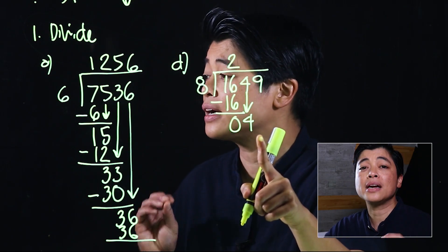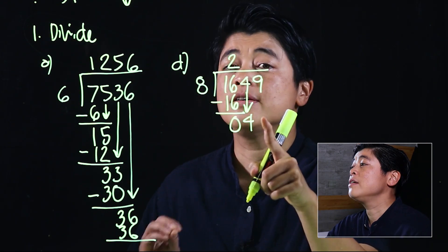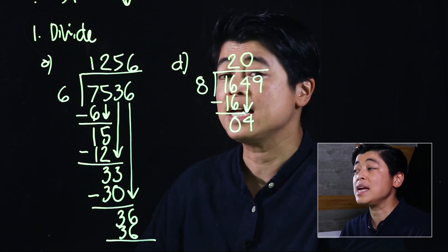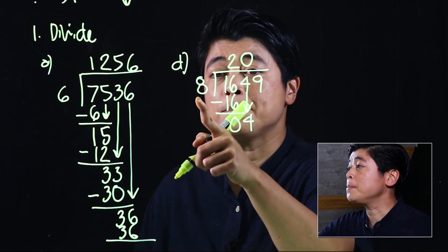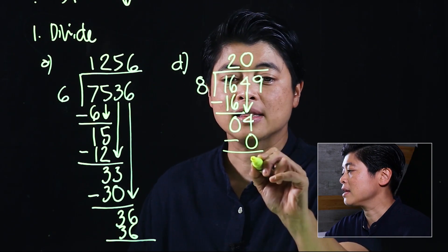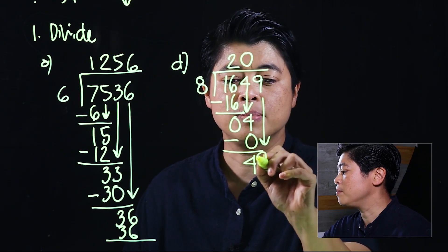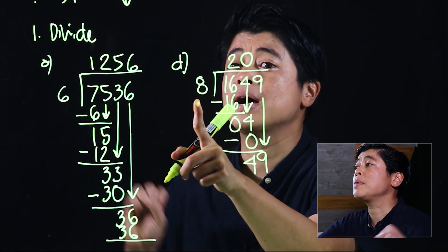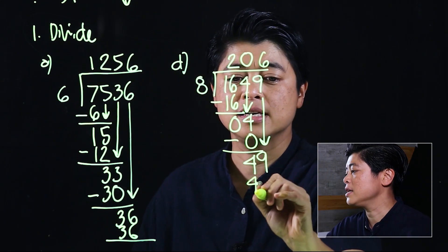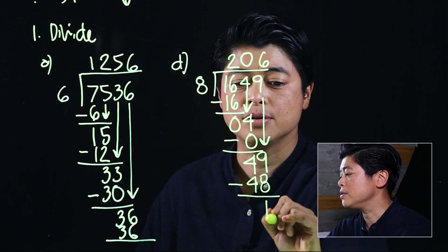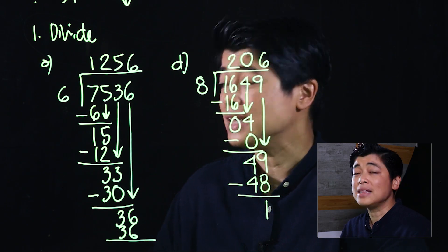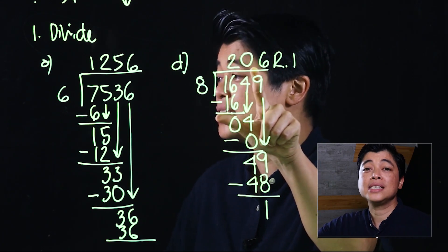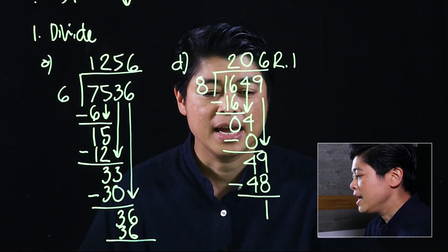A common problem for kids is when they see 4 divided by 8 and don't know what to do. We remind them: there are no 8s in 4, so the answer is 0. Multiply: 0 times 8 is 0. Subtract: still 4. Bring down to make 49. 49 divided by 8 is 6 — counting by 8s gives us 48. Subtract: remainder is 1. Since there's nothing else to bring down, the quotient is 206 with a remainder of 1.